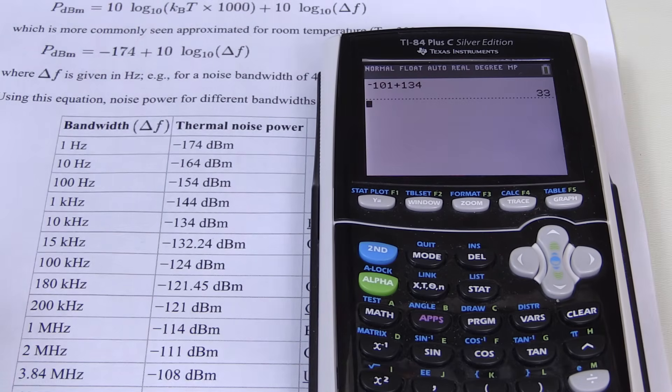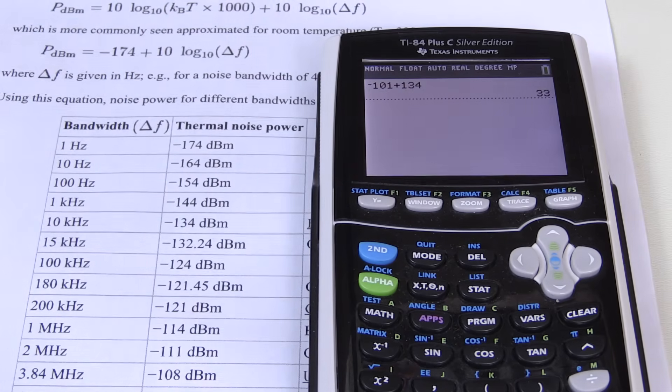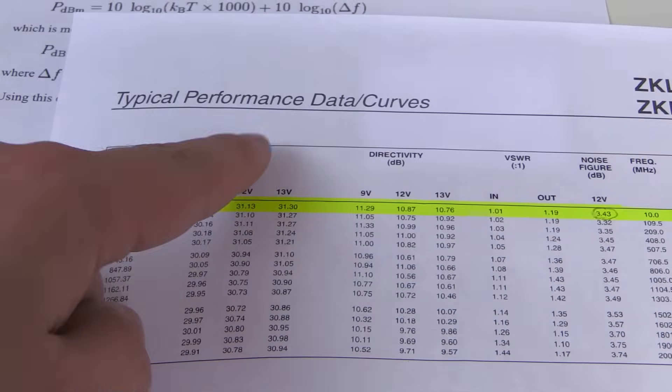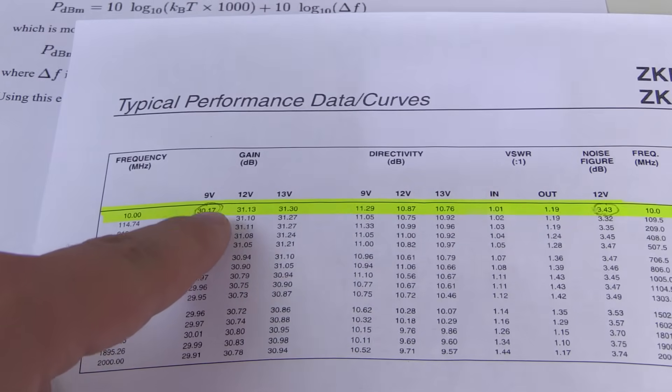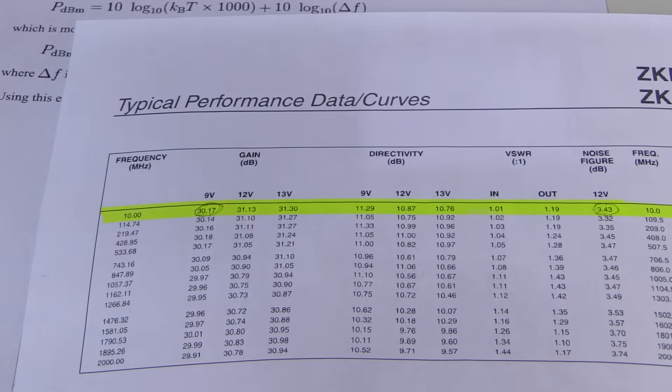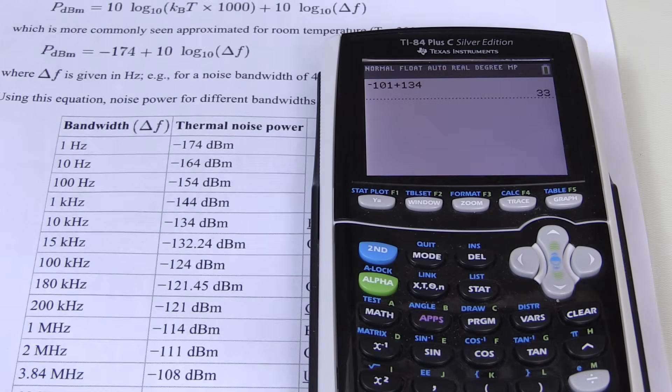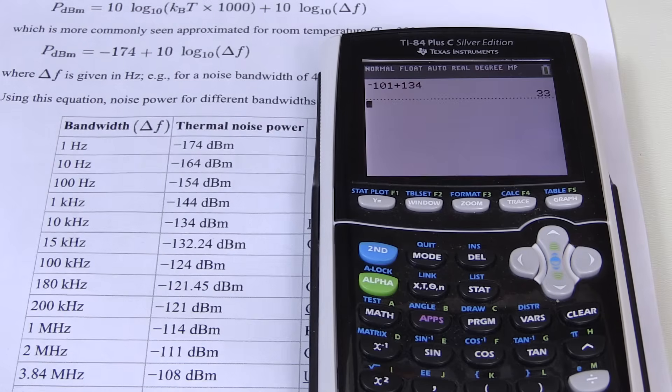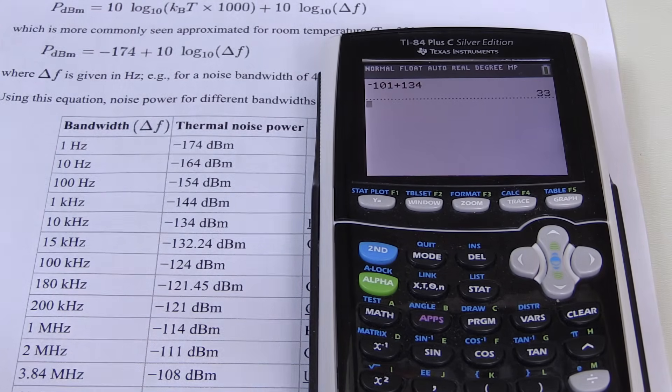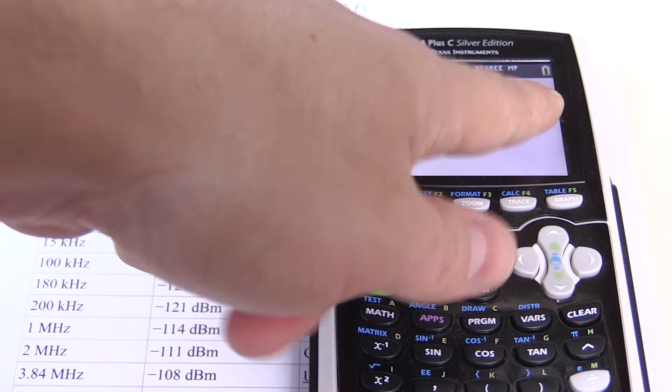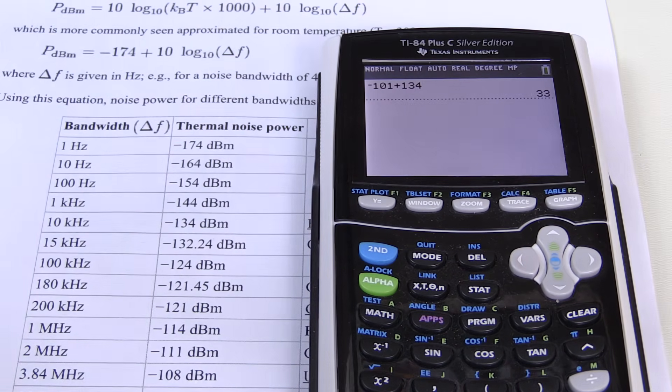And 33 dB is how much above thermal noise the output of this amplifier is. And we expect some of this to be attributed to the amplification, of course. I mean, the noise is going to get amplified. And we remember from the datasheet right here that our expected gain is 30.17 dB. And you should absolutely verify that. I mean, this is just a datasheet value. It does not mean that this amplifier actually has this gain at this supply voltage and this frequency and all that good stuff. But I did verify it. It was pretty darn close. So we're just going to go with that number.